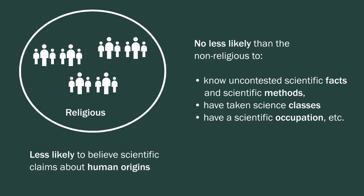The extent to which people have taken science classes, have a scientific occupation and so on and so forth. So there's a disagreement about one limited scientific claim, human origins. But this one fact claim does not lead to disagreement over other scientific fact claims and does not lead to a systemic avoidance of science. In other words, they are not in systemic knowledge conflict with science.